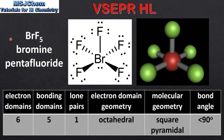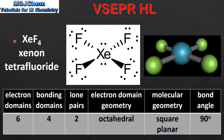The next example is BrF5, which is bromine pentafluoride. By looking at the Lewis structure we can see there are 5 bonding domains and 1 lone pair of electrons around the central atom. The electron domain geometry is octahedral. The molecular geometry is square pyramidal and the bond angle is less than 90 degrees.